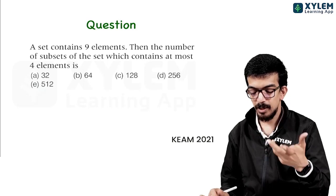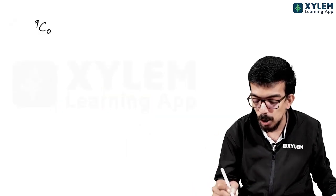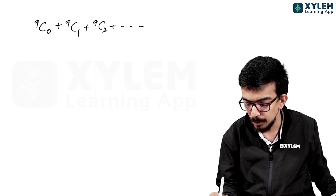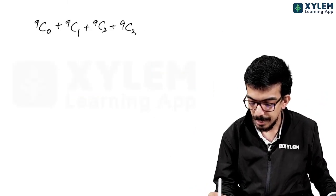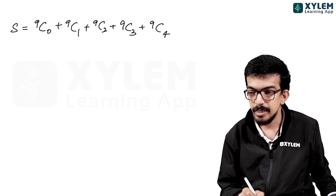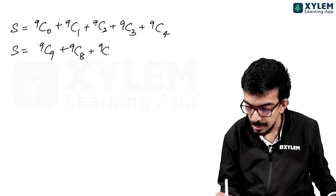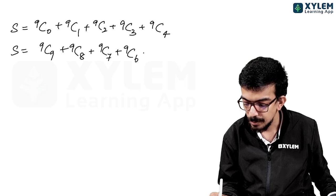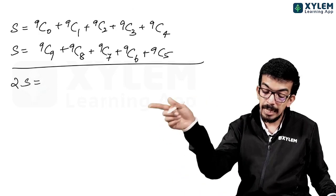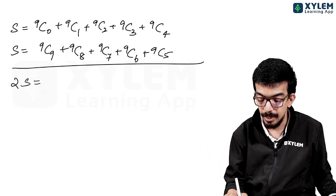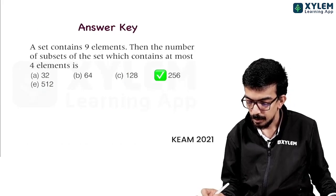Next question. A set contains 9 elements. The number of subsets of the set which contain at most 4 elements. We use 9C0 plus 9C1 plus 9C2 plus 9C3 plus 9C4. This equals 2^8, which is 256. So 256 is the right answer.